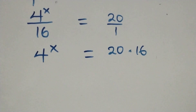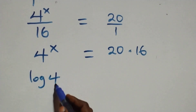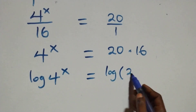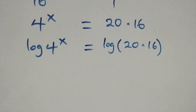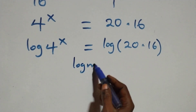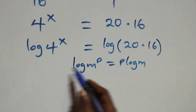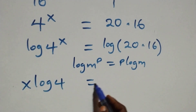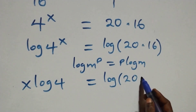Next, we take the log on both sides: log of 4 raised to power x equals log of 20 times 16. We then apply the power law of logarithms — when we have log m raised to power p, it equals p times log m. So x log 4 equals log of 20 times 16.